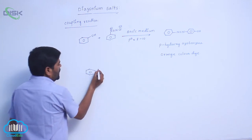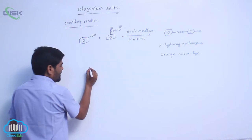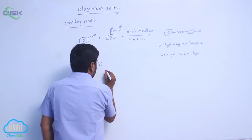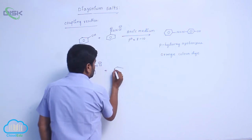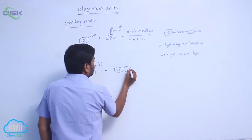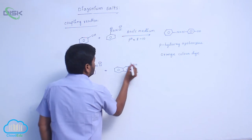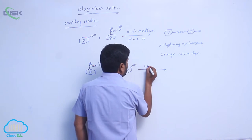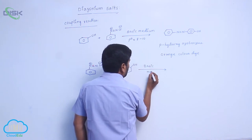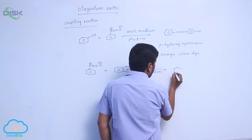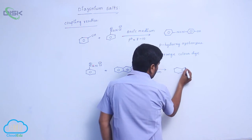Benzene diazonium chloride (N≡N+ Cl-) reacts with beta naphthol, which is also an alcohol, in presence of basic medium to form a dye.